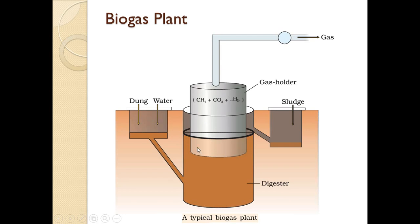The digester or concrete tank is covered by a floating lid. It is floating — not fixed — because as the methanogenic bacteria break down the biowaste, they produce biogas, and as the amount of biogas in the digester increases, the lid starts to rise. This acts as a gas holder containing a mixture of gases like methane, carbon dioxide, and hydrogen. From the gas holder there is an outlet connected to pipelines fitted to nearby houses so they can use the biogas for cooking and lighting.